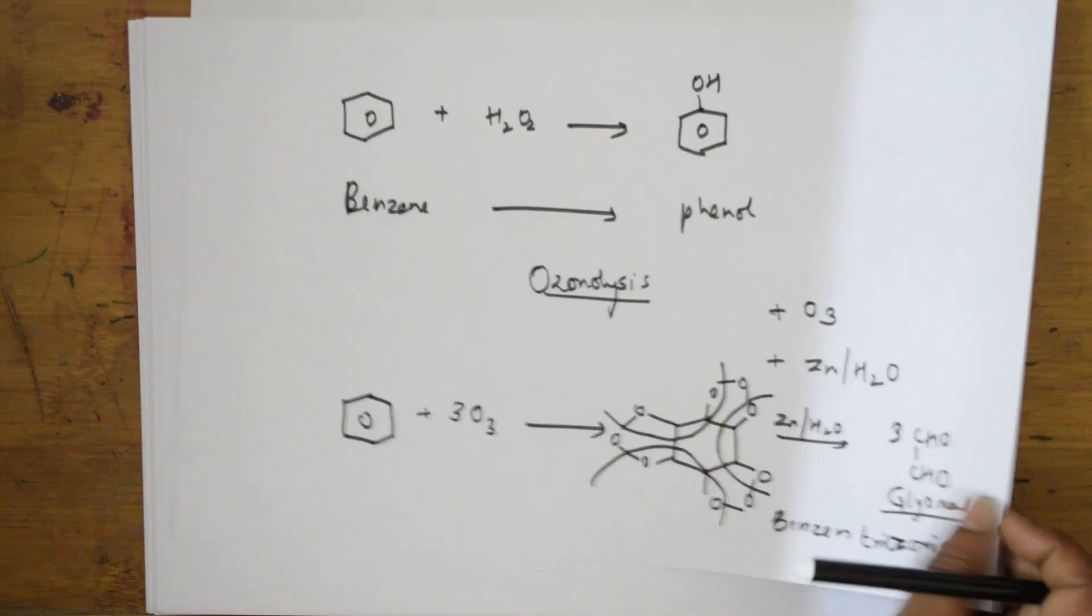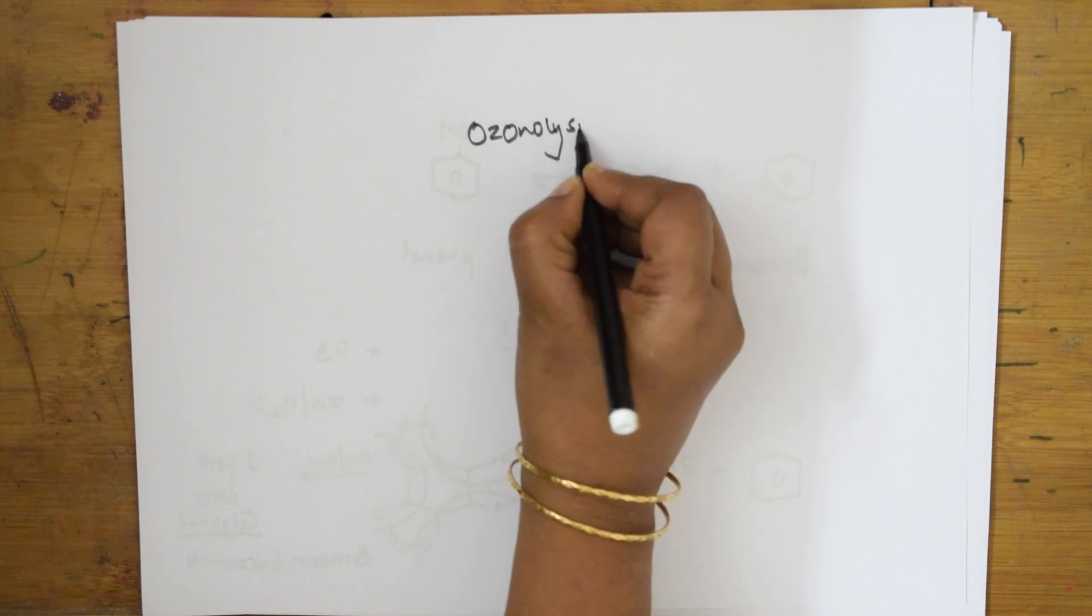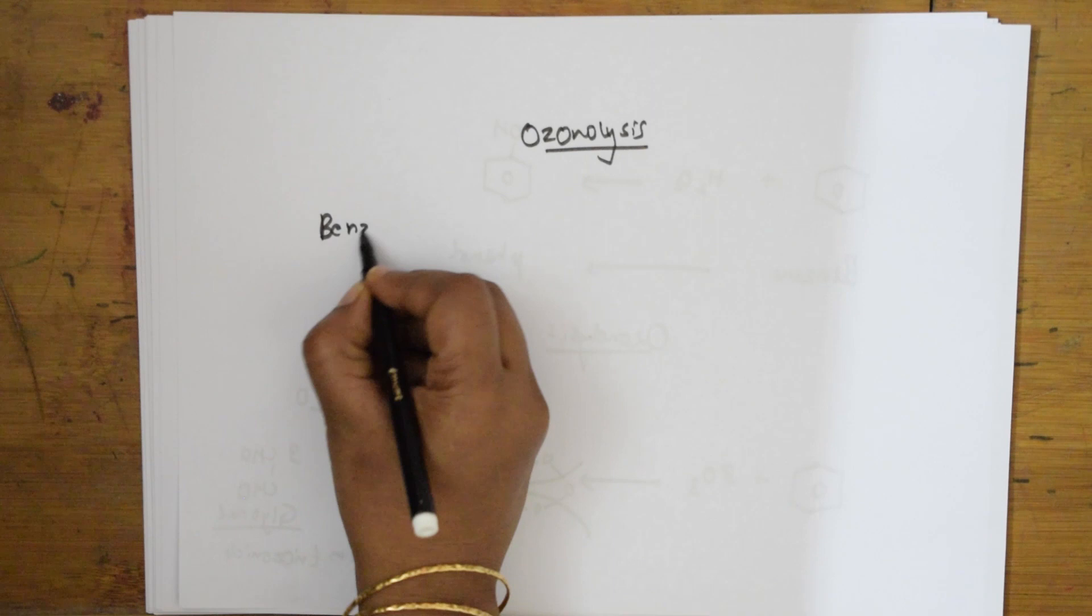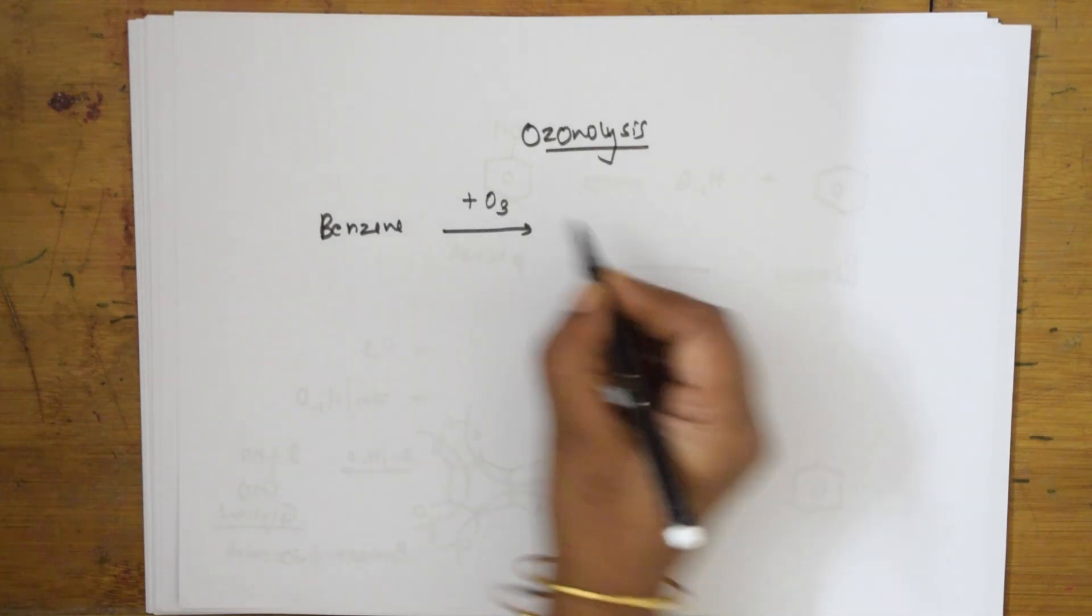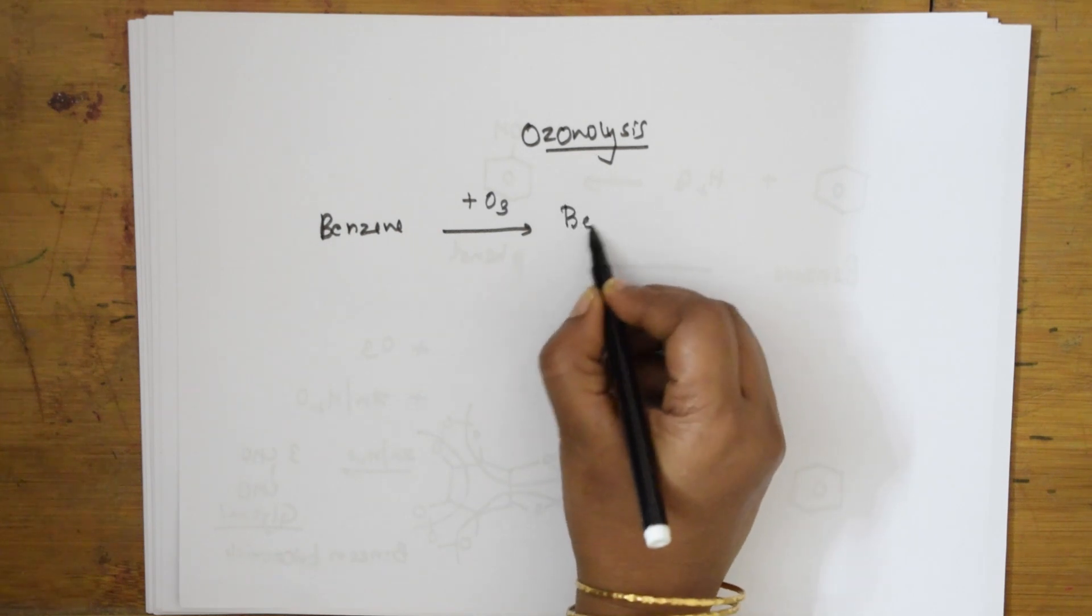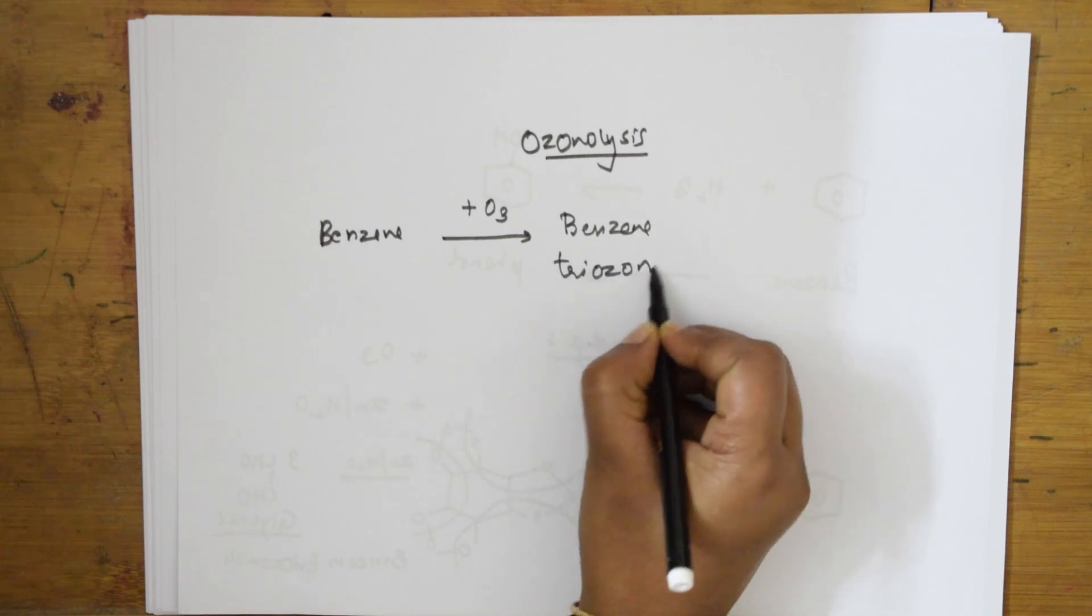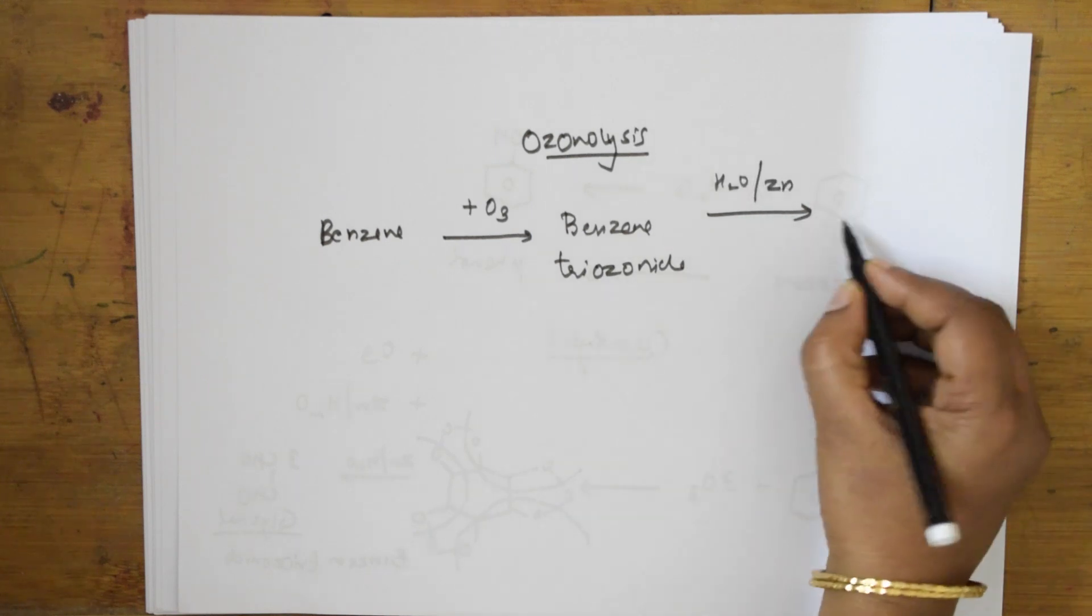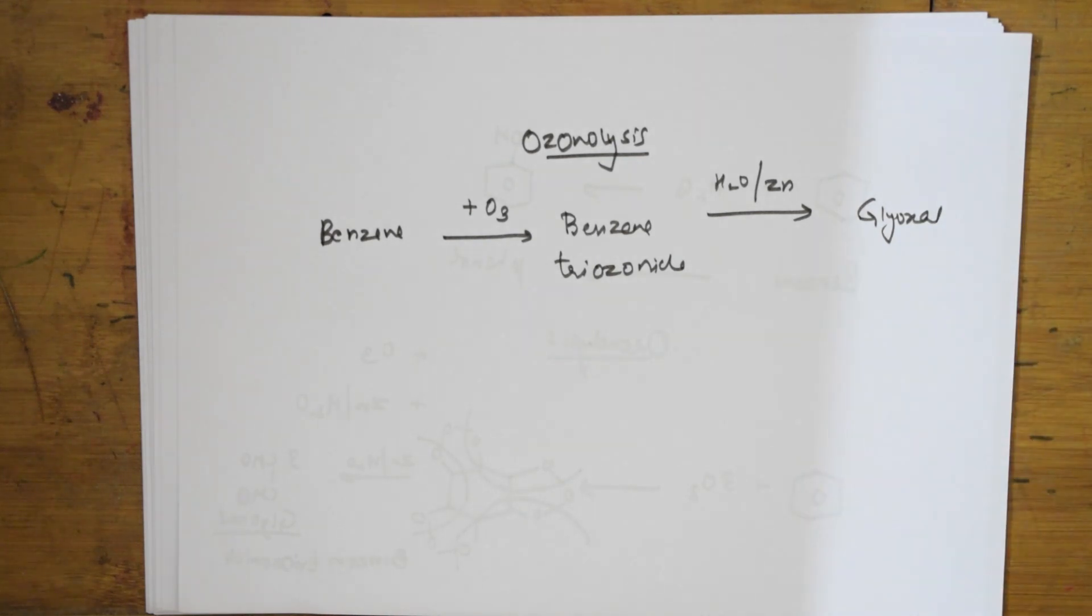Just once again we will see. In ozonolysis reaction, what is the step? First we have taken benzene. After benzene, whatever we do, I am going to add ozone. It is going to form a compound called benzene triozonide. This benzene triozonide, I am going to add water and zinc, I am going to get glyoxal. How many moles? Three moles of glyoxal. This is your ozonolysis reaction.